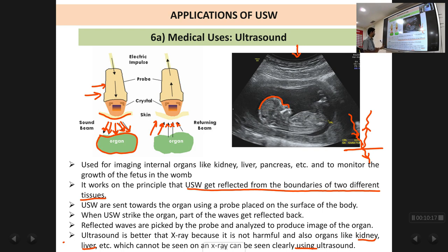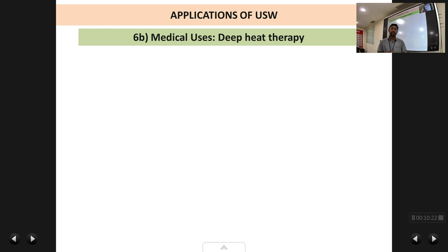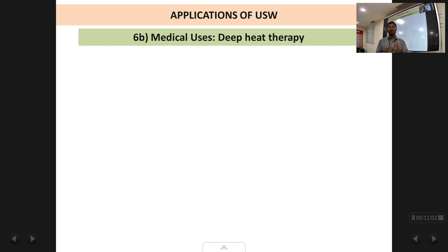The next medical use of ultrasonic waves is called deep heat therapy, a technique used to relieve muscle pain deep inside the body. Normally when we have a sprain, we apply a balm or ointment. These balms generate heat in the muscle — you must have experienced the intense heat created — and this heat takes away the pain. However, the problem with balms and ointments is that they will not penetrate deep inside the muscle; at most one centimeter inside. So only surface muscle pains can be relieved this way. If the pain is deep inside a thick muscle like the thigh or shoulder, these treatments will not give relief.